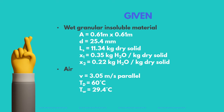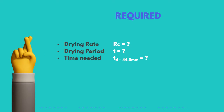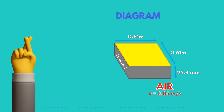First, we list down the given properties for the wet, granular, insoluble material and for the air. Then we determine the required values, which are the drying rate, the drying period, and the drying period for a different depth of material. To visualize the problem, we create a diagram which shows the flow of air that is parallel to the top surface of the pan. Notice that the sides and the bottom are insulated.